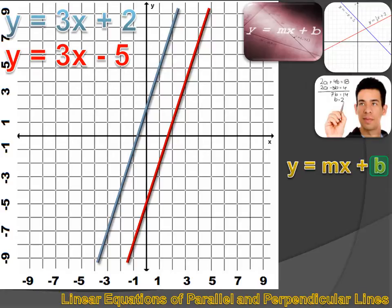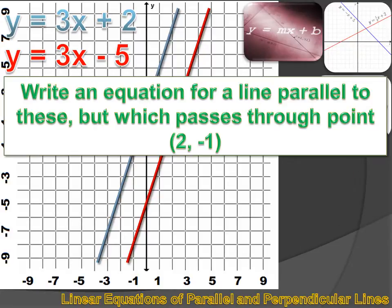The blue line has a y-intercept of plus 2, and the red line has a y-intercept of minus 5. What if we were asked to write an equation for a line that was parallel to these two but passed through the point (2, −1)? We know the slope would be the same as both of these lines — it would have a slope of 3 — so we can start out with y equals 3x plus b.